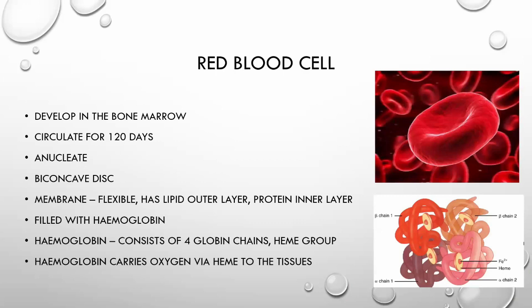Going back to basics: red blood cells develop in the bone marrow and circulate for about 120 days. When mature, they have no nuclei — just a biconcave disc filled with hemoglobin. The membrane is flexible, allowing the cell to travel through vessels and fold around small areas. Hemoglobin has four globin chains: normally two beta and two alpha chains, each with a heme group consisting of iron.